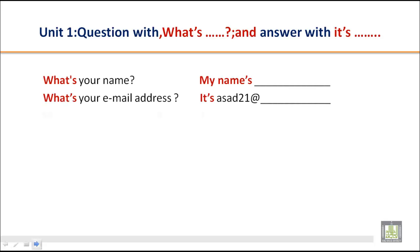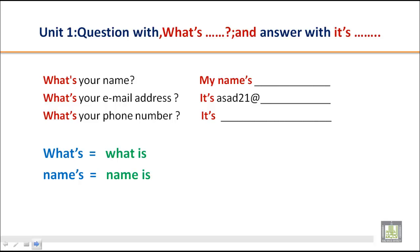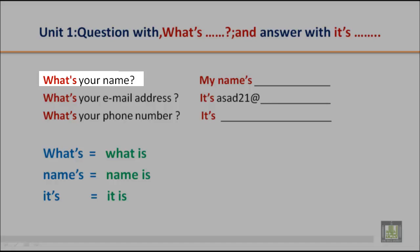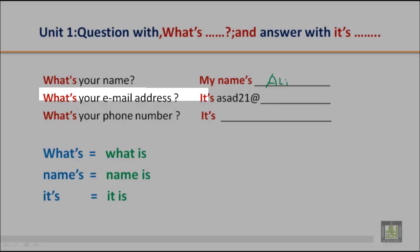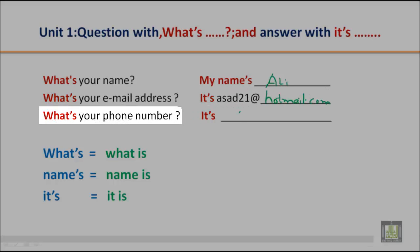Now we will ask questions with 'what' and answer with 'it's.' For example: 'What's your name?' — 'My name is Ali.' 'What's your email address?' — 'It's asad21 at hotmail.com.' 'What's your phone number?' — 'It's 0596 0000.'